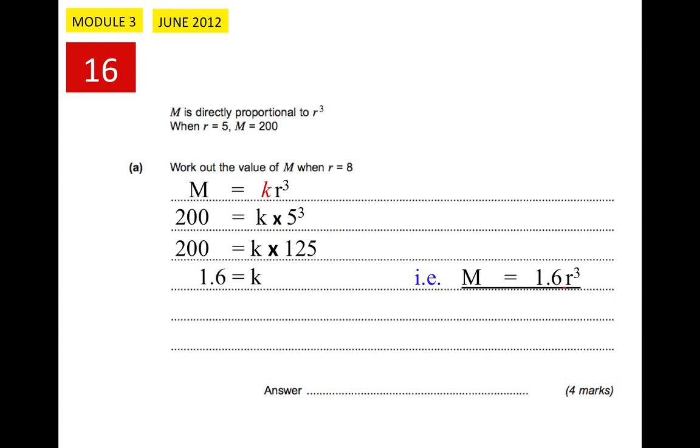So if r equals 8, we get M equals 1.6 times 8 cubed. And that works out to 819.2. So the answer is that when r is 8, M equals 819.2.